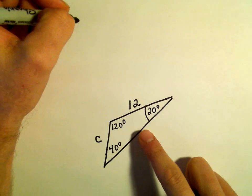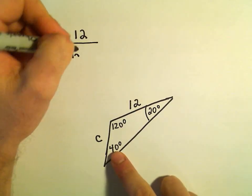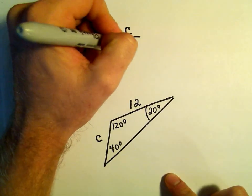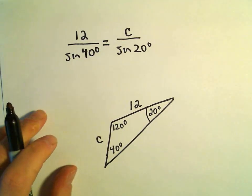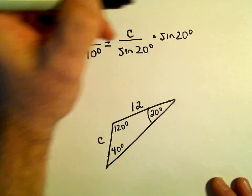Now we can set up our equation. We can do 12 over sine of 40 degrees equals c over sine of 20 degrees. To solve for c, we'll multiply both sides by sine of 20 degrees.